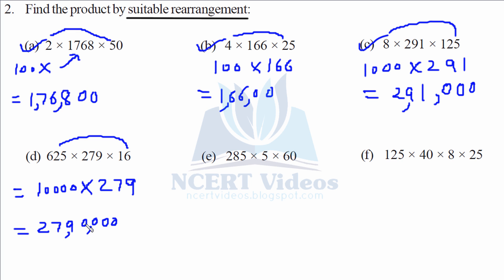Part e. 285 into 5 into 60. Here we will multiply 5 into 60 because it gives us 5, 6 to 30 and 0 added, 300 into 285. Again, we can place 00 as it is. And now multiplying 285 by 3. We can multiply it here also. Look, 5, 3 is 15. So we will write 5, 1 carry, 24 plus 1, 25, 2 carry, 6 plus 2 is 8. So it is 85,500.